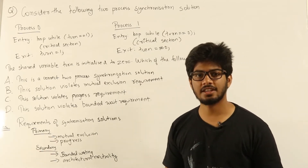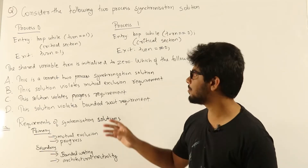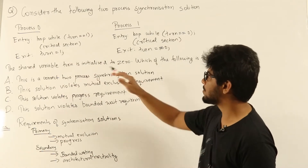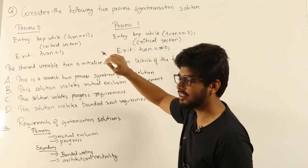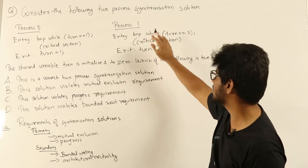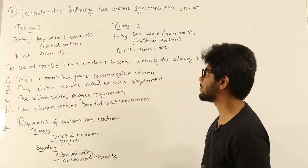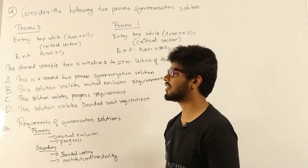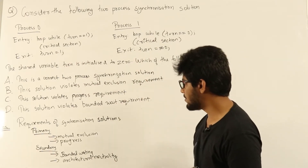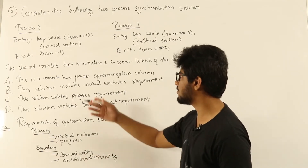Progress means if some process needs to enter the critical section, then some other process which is not planning to enter the critical section should not be controlling or blocking the process that wants to enter. For example, suppose process 0 wants to enter the critical section, and process 1 currently doesn't want to enter the critical section — then process 1 should not block or slow down process 0 from entering. Process 0 should be allowed to enter the critical section in such cases.